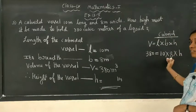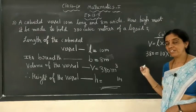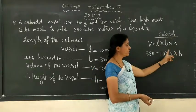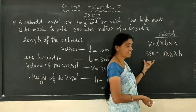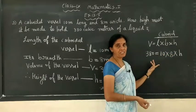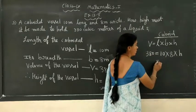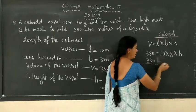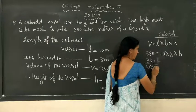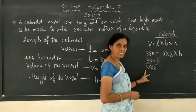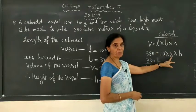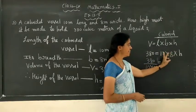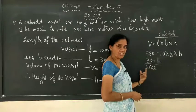Now we want h, so bring all the values to this side — after simplification we will get the answer. 10 and 8 are multiplied with h; if you bring them to the other side of the equal sign, the operation is reversed — into will change into divide. So 380 is on one side, divided by 10 × 8. Both are in the denominator; since they are 10 × 8 = 80, it is a single number.